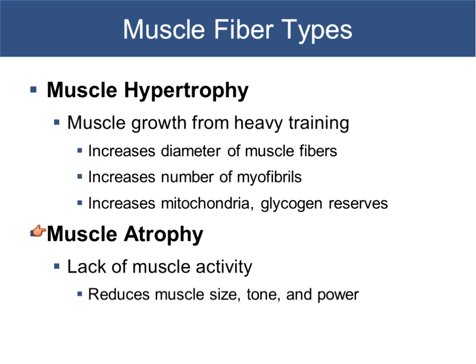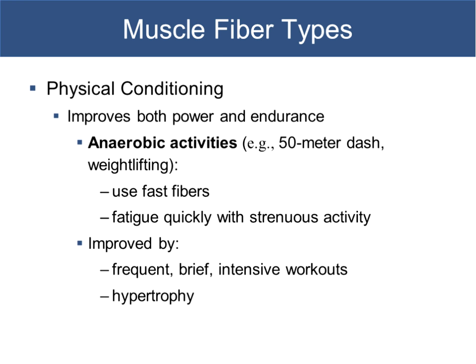Muscle atrophy results from lack of muscle activity — everything that happened in hypertrophy reverses. Muscle size, tone, and power are reduced. Muscle atrophy can begin in as few as three days without exercise, so it's a good idea to exercise even during vacation. Skipping four or five days makes it feel like starting over because, in a sense, you kind of are losing some of the gains made from your exercise routine.